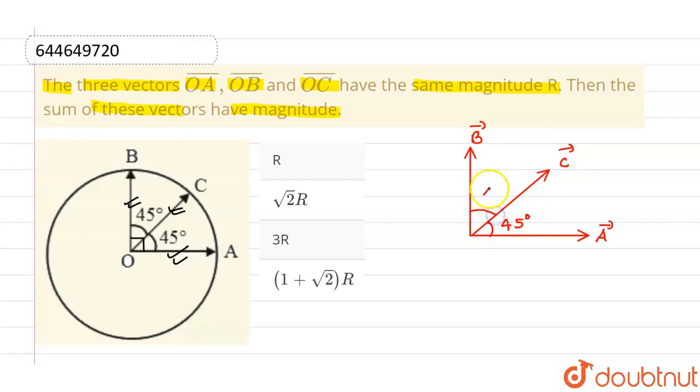Now, since the magnitude of A vector equals magnitude of B vector and equals magnitude of C vector, which equals R, the resultant of OA vector and OB vector, which are at an angle of 90 degrees, will be equal to root 2 times the magnitude of one vector, which is R.